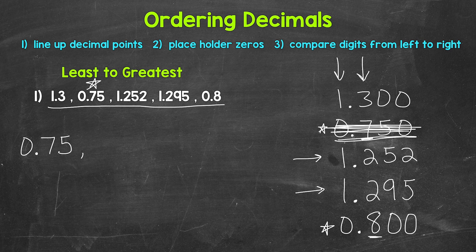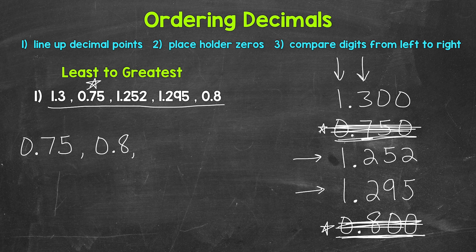Now back to what we have remaining, and we start the process over. Starting in the ones place, we have a one, a one, a one, and a zero. Zero is the smallest in value, so that comes next. Since we only have one number with a zero left in the ones place, that's going to be eight tenths. So let's write eight tenths and cross this off. Looking at the ones place, we have all ones now, so we move over to the tenths place. We have three, two, and two. Those twos are less than three, so we have this narrowed down to these right here.